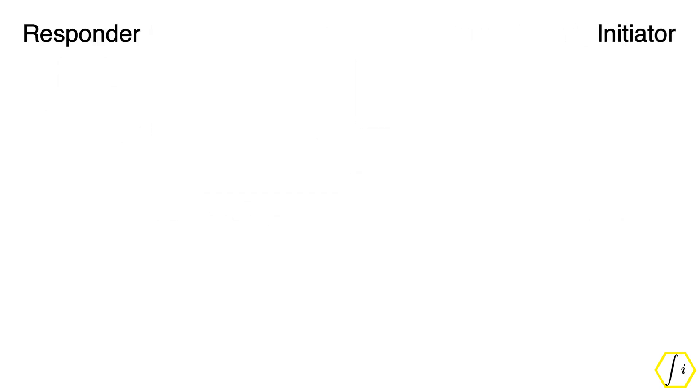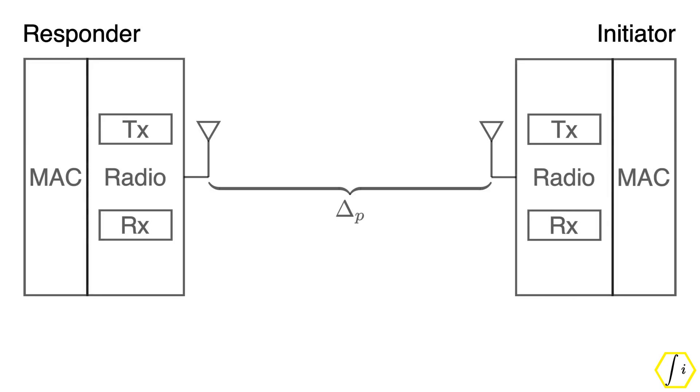That's a high level introduction to 11MC and 11AZ, but the focus of this talk is a different problem. Every Wi-Fi device consists of a MAC layer which is implemented with digital circuits and a radio which comprises of some digital signal processing logic and some analog circuits for the transmitter and receiver.